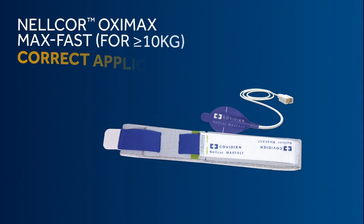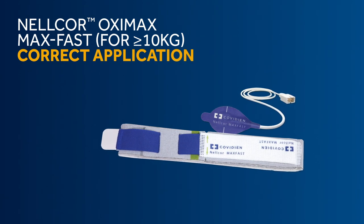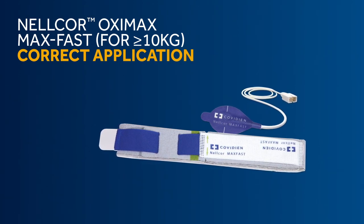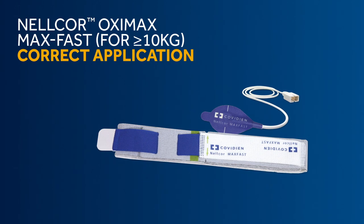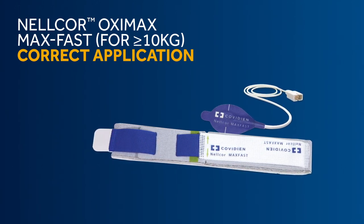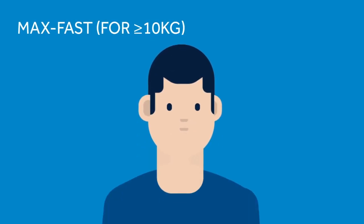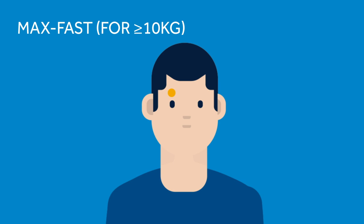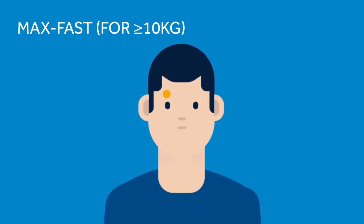When timing for your patient is critical and you need accurate data quickly, or if your patient is peripherally shut down and you cannot obtain readings from the finger or ear sites, MAX-FAST is your sensor. The MAX-FAST is placed just above the left eye or right eyebrow. The site will provide instant accurate readings, as readings are obtained from the internal carotid artery, the same source that supplies blood to the eyes and brain.